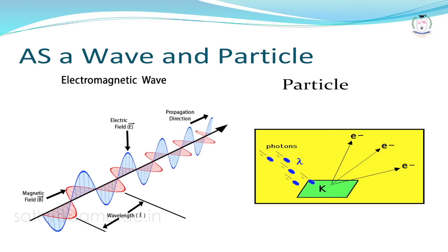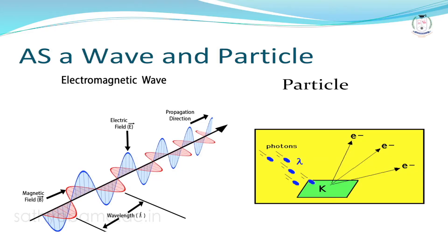The particle nature of electromagnetic radiation is evidenced by Einstein's photoelectric effect, where a photon strikes a photoelectric material and electrons are ejected. The dual character of electromagnetic radiation is represented by the de Broglie wavelength: lambda equals h divided by p, where h is Planck's constant, p is the momentum of the particle, and lambda is the de Broglie wavelength.